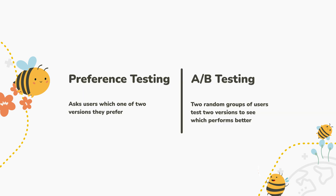The key difference between preference testing and A-B testing is that with preference testing, we are asking a user which one of two versions of something they prefer. But with A-B testing, we give two random groups of people two different versions and see which one would perform better.